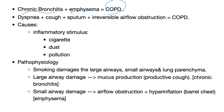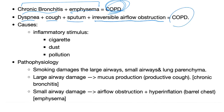Chronic bronchitis plus emphysema equals COPD. Most patients with COPD have both. Symptom-wise: dyspnea plus cough plus sputum plus irreversible airflow obstruction — this is COPD. This is different from asthma, especially intermittent asthma, because asthma is episodic and reversible. COPD is fixed.